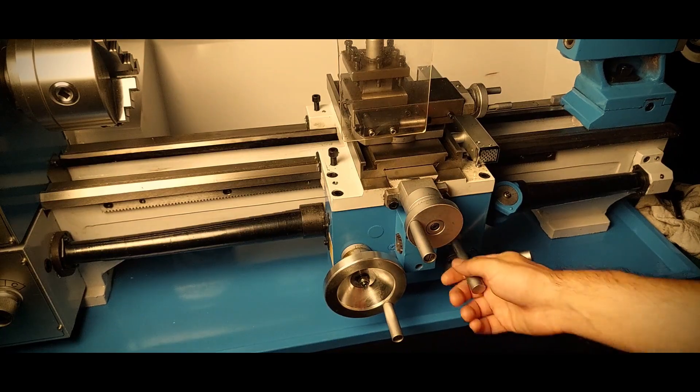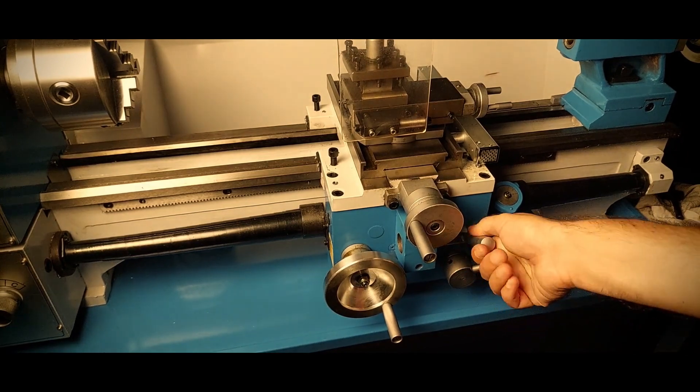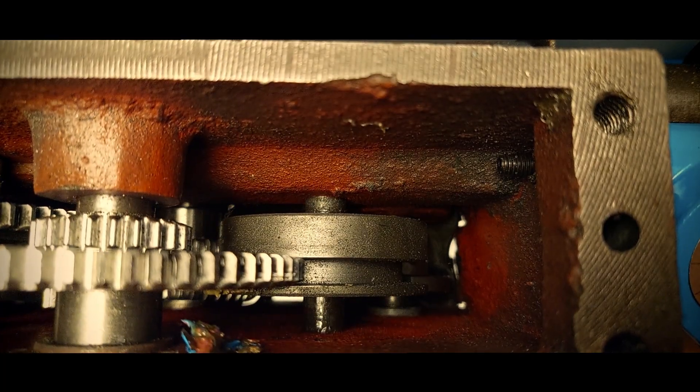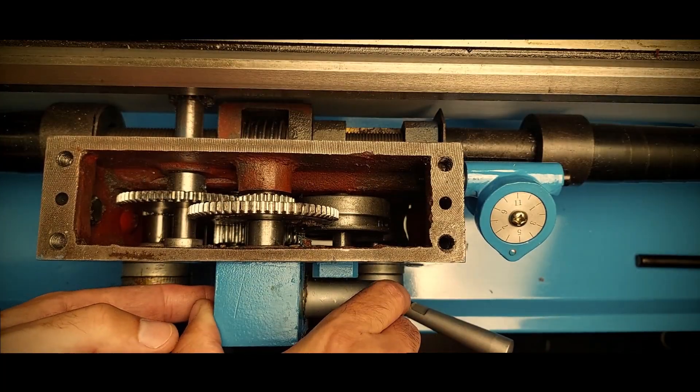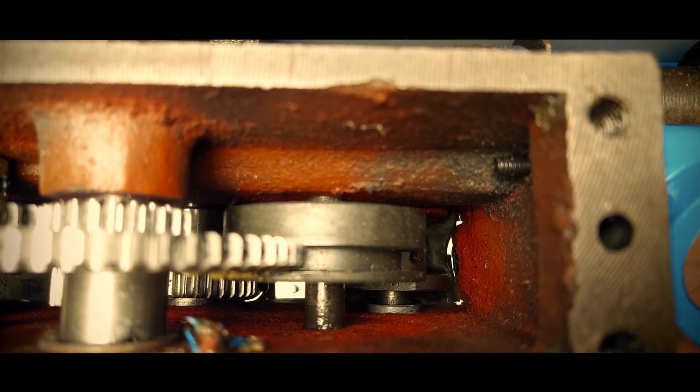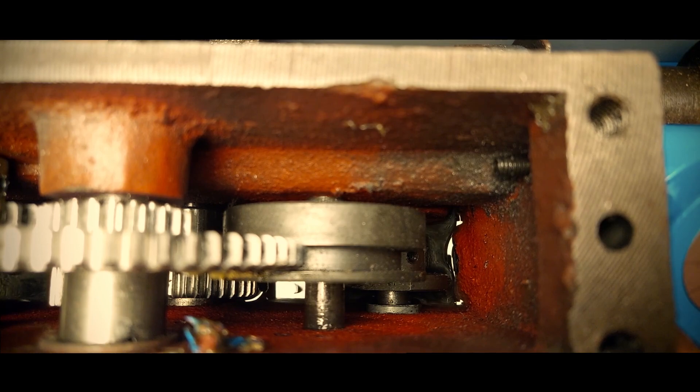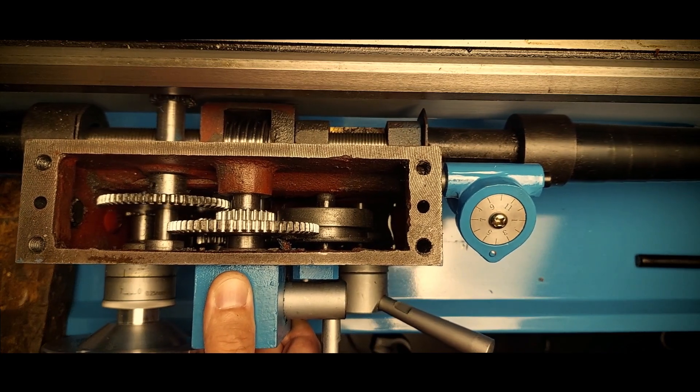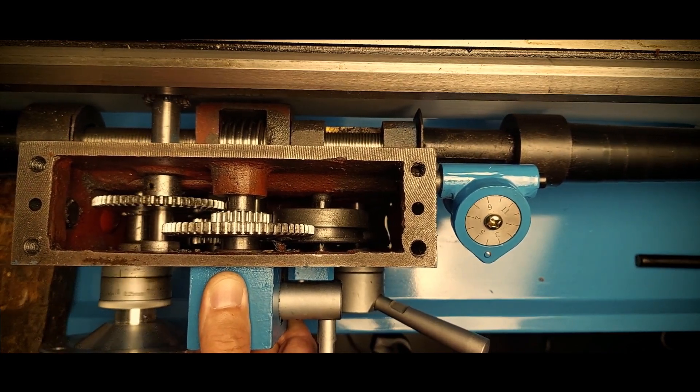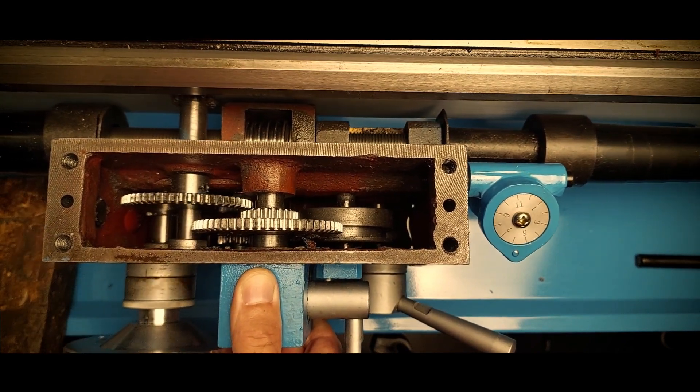Since this lathe has power feed on both Z and X axis, we have an extra lever that moves this hub to engage the corresponding axis. The selector hub also works as a gate to avoid having the half nut engaged while power feeding or vice versa. Finally, we have a free gear that we can crank manually to position the carriage along the bed.